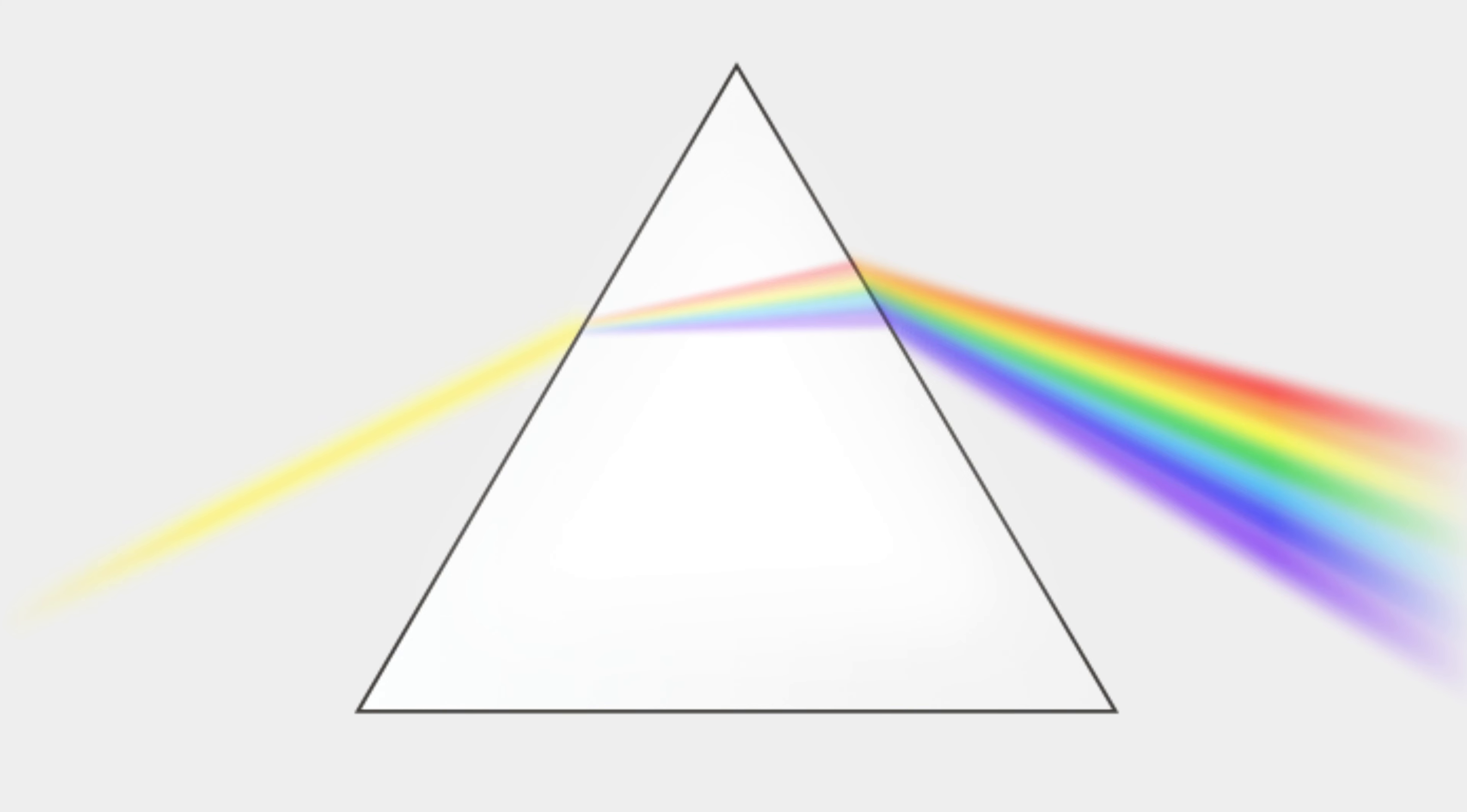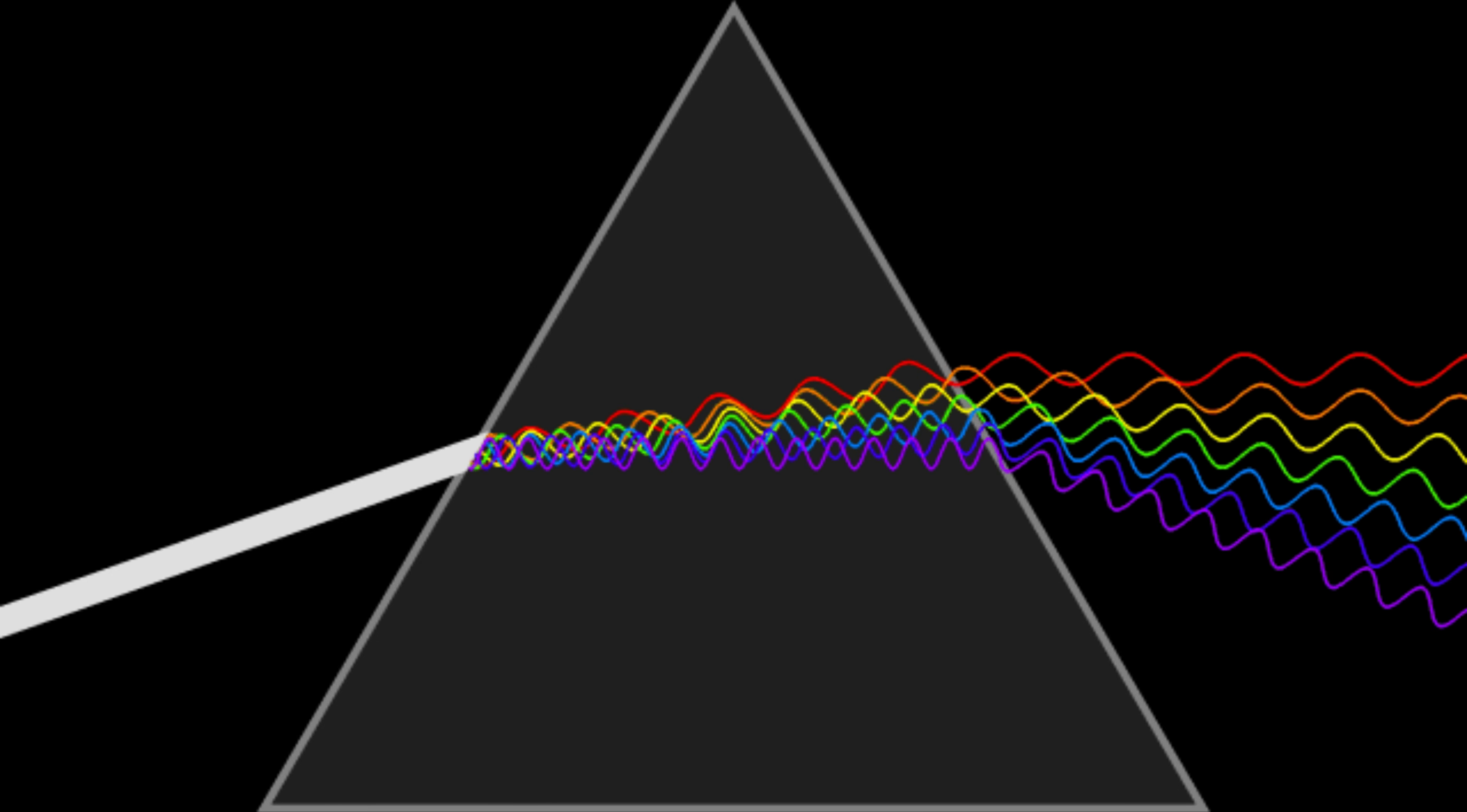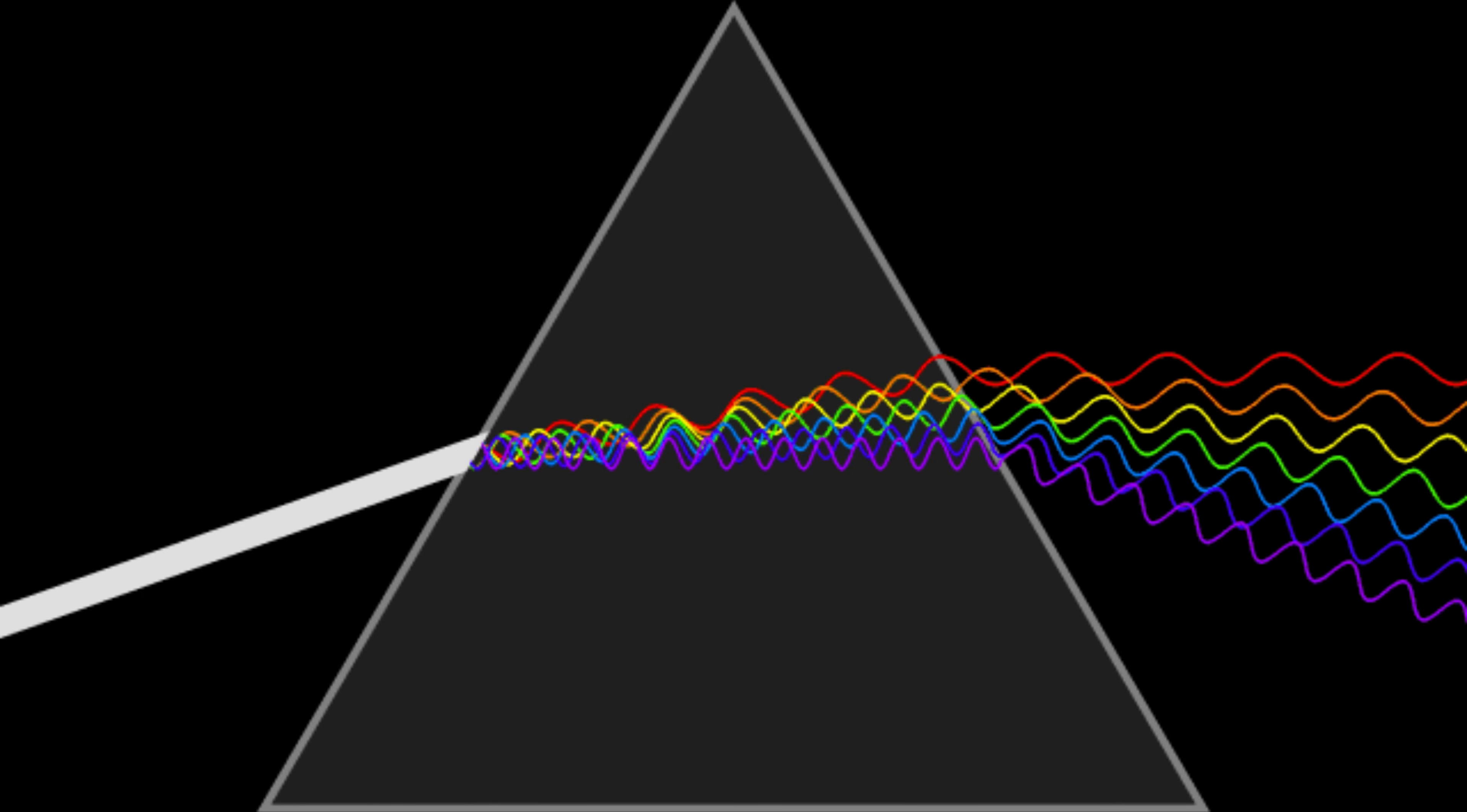Ever seen a prism turn white light into a rainbow? It's not magic, it's science. In this video, we'll crack the code on light diffraction, why it happens, and how it affects the way we see the world. Let's explore together.